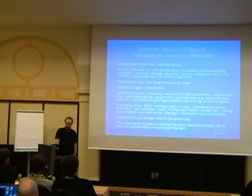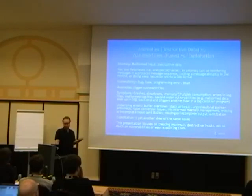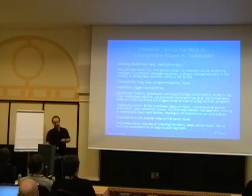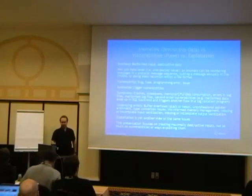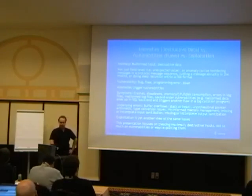When we talk about destructive data and anomalies — the inputs you use to attack software — vulnerability is the underlying condition. It's the bug, the flaw, the programming error, or what some vendors just call an 'issue,' that the destructive data is actually able to trigger. The anomalies we create and send to a piece of software trigger the underlying programming errors that may exist in the software.